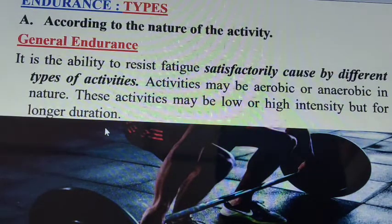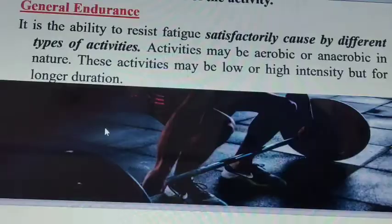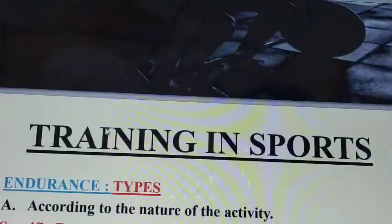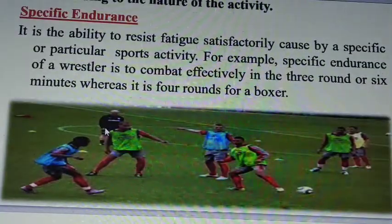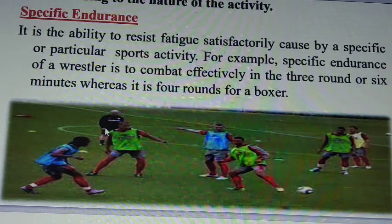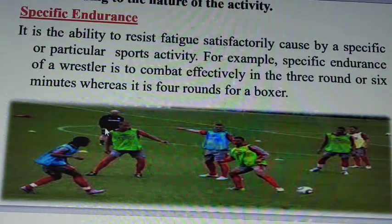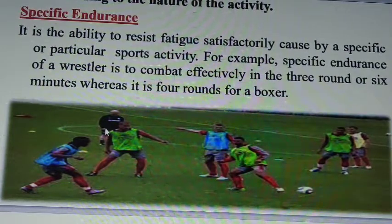General endurance is the ability to overcome fatigue satisfactorily through different types of activities for a longer duration. Specific endurance is the ability to resist fatigue satisfactorily caused by a specific or particular sports activity — for example, specific endurance for a wrestler to combat effectively in three rounds or six minutes, or four rounds for a boxer.